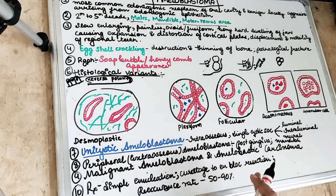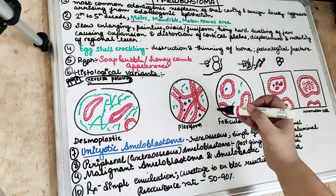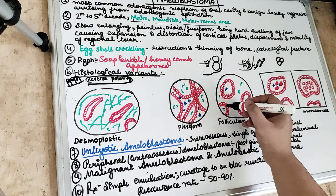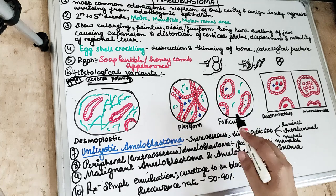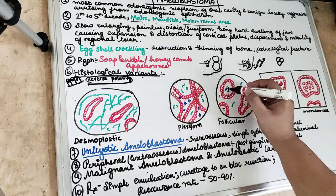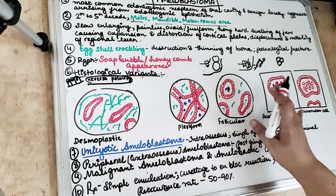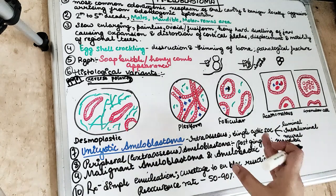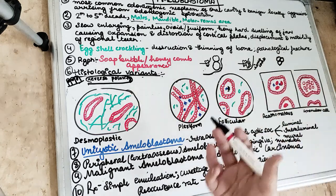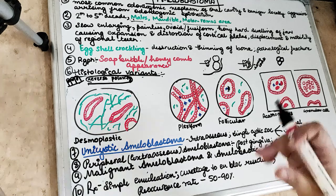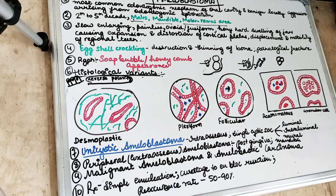In the follicular pattern, there is cystic degeneration. The peripheral cells show reverse polarization, with nuclei away from the basement membrane. In between there is a central mass of cells resembling stellate reticulum — star-shaped cells — within a connective tissue matrix. The odontogenic epithelial cells are arranged as multiple follicles or islands, with tall columnar ameloblast-like cells at the periphery.